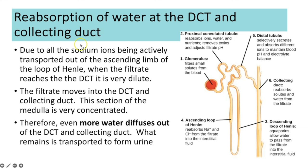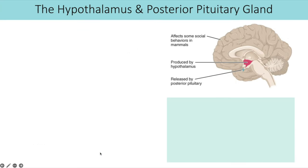When the filtrate reaches the distal convoluted tubule, it is very dilute because many ions have been removed. As that filtrate moves into the DCT and collecting duct, the interstitial space in the medulla is very concentrated, so even more water diffuses out of the DCT and collecting duct. Whatever remains in the collecting duct then goes on to form the urine. That is how the nephron filters the blood.